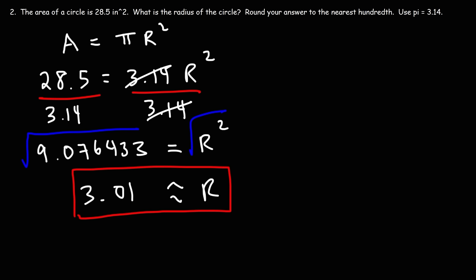Let's not forget the units. The unit for area is square inches, so the unit for the radius is just inches. The radius, diameter, and circumference all have linear units like inches, feet, or yards. Area is always in square units. These two units must match.